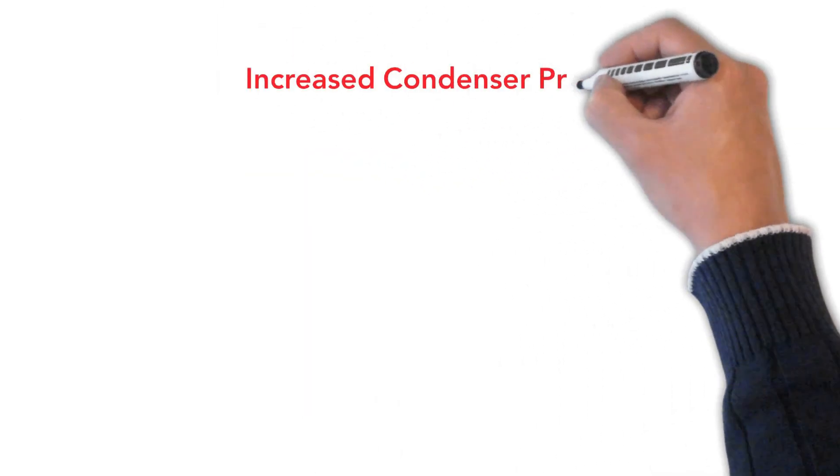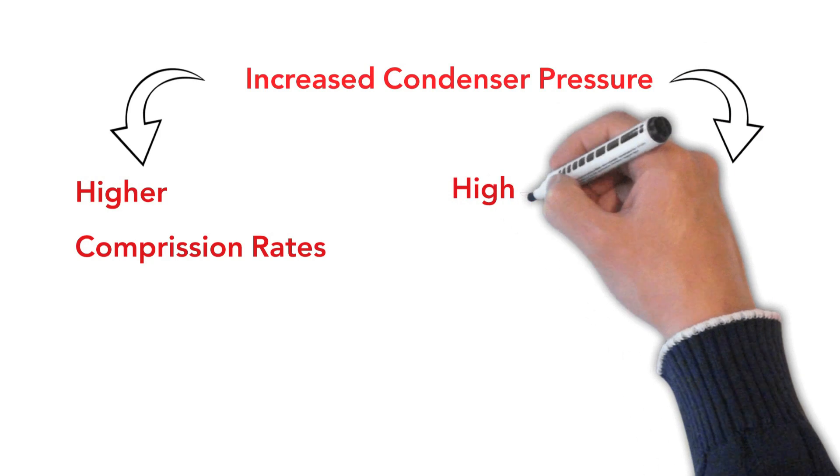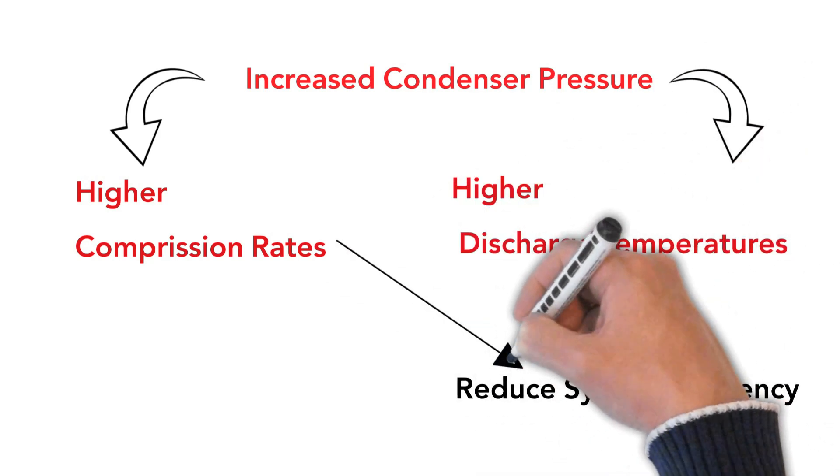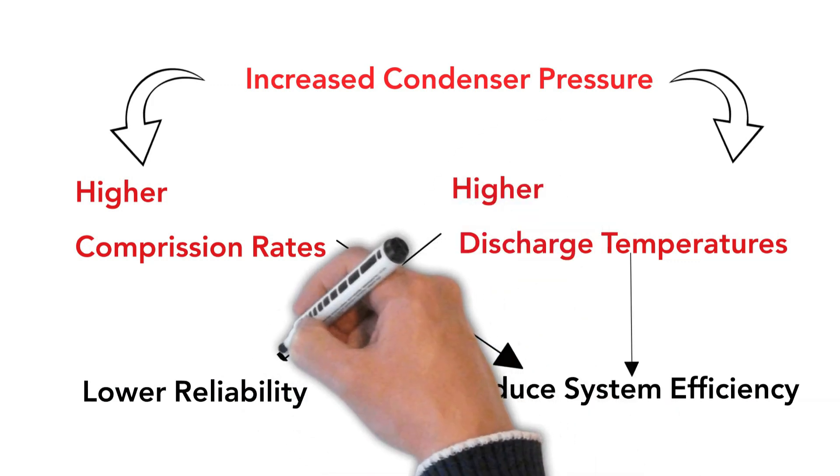Increasing condensing pressure leads to higher compression ratios and higher discharge temperatures, both of which reduce system efficiency and can lead to lower reliability.